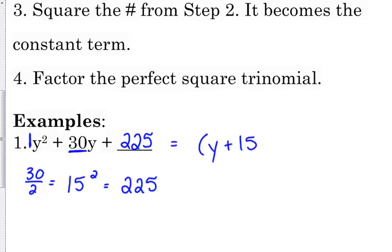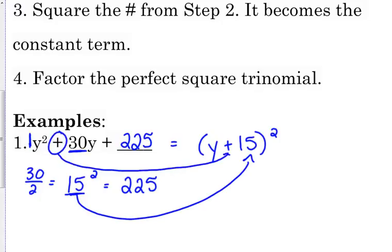So then if we want to factor this, it's going to be y plus 15 squared. Every single time, the number you squared is what goes inside your factor, and the first sign is the sign that goes in the factor. So it's positive 30, so it's going to be plus 15.